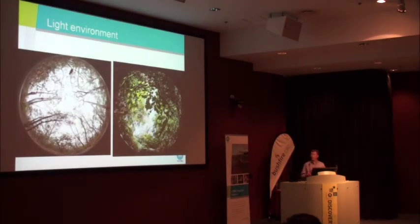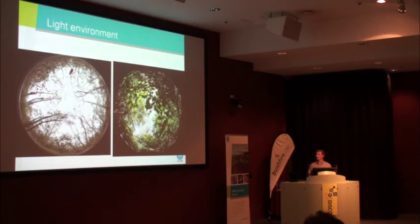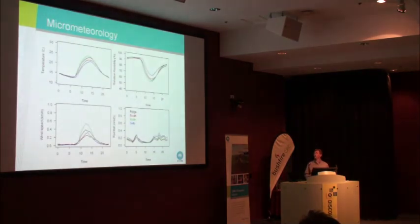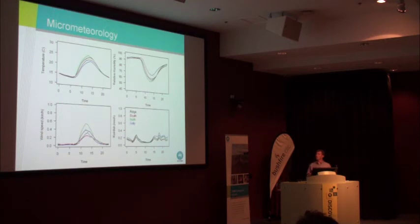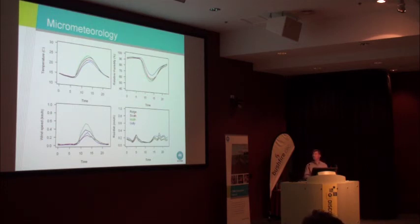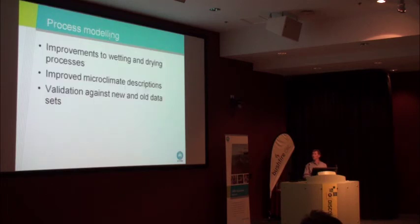The reasons for that? Light environment is part of it — canopy photos from the top of Mount Dandenong and from the rainforest gully show much more light getting down to the fuel on the open slope than in the gully, so you can imagine that would dry out more quickly. There are also differences in meteorology at a very fine scale: comparing the ridge site to the gully site at Winmalee, the gully is much cooler with a much higher humidity, as well as those differences in radiation, and that's going to affect the fuel moisture drying as well.